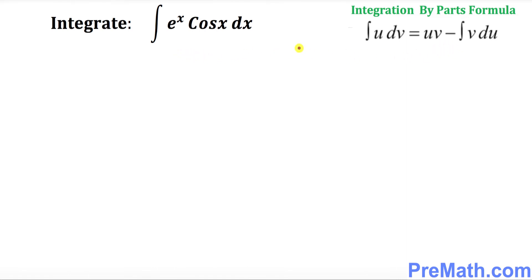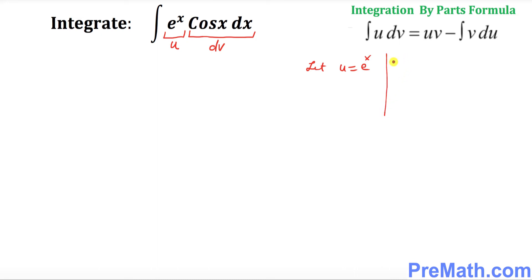Since we are using integration by parts, I'm going to call e^x as u and the other part as dv. That means let u equal e^x, and on the other side, dv equal to cosine(x) dx.